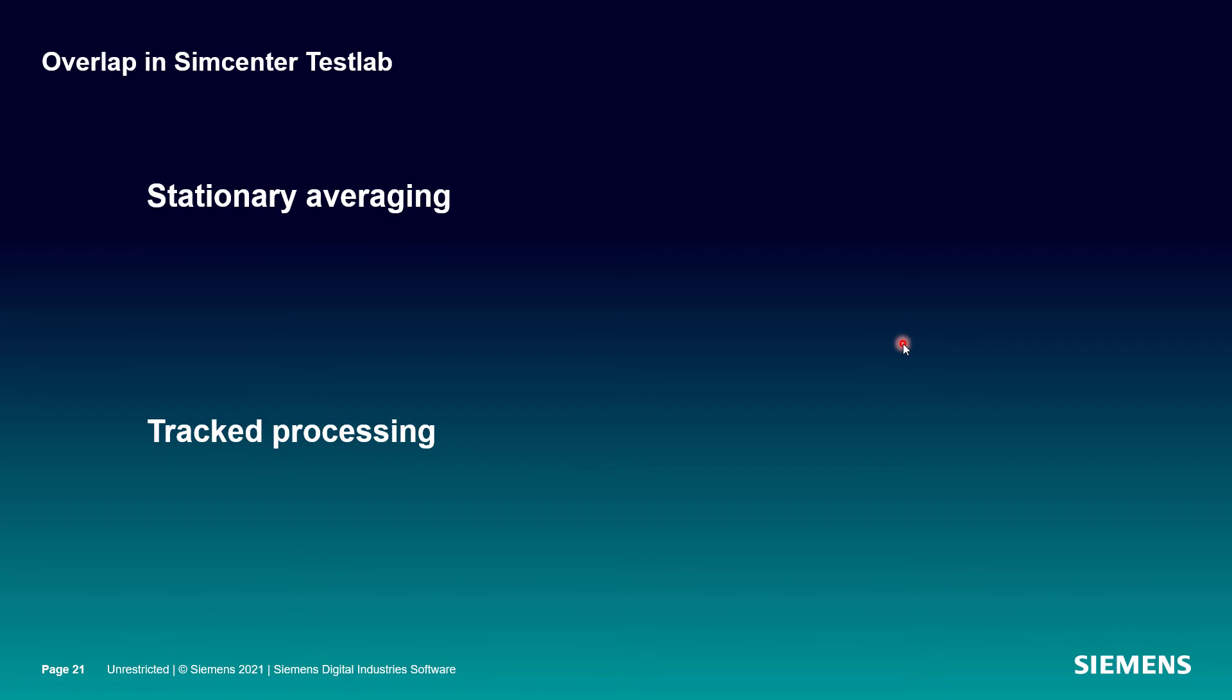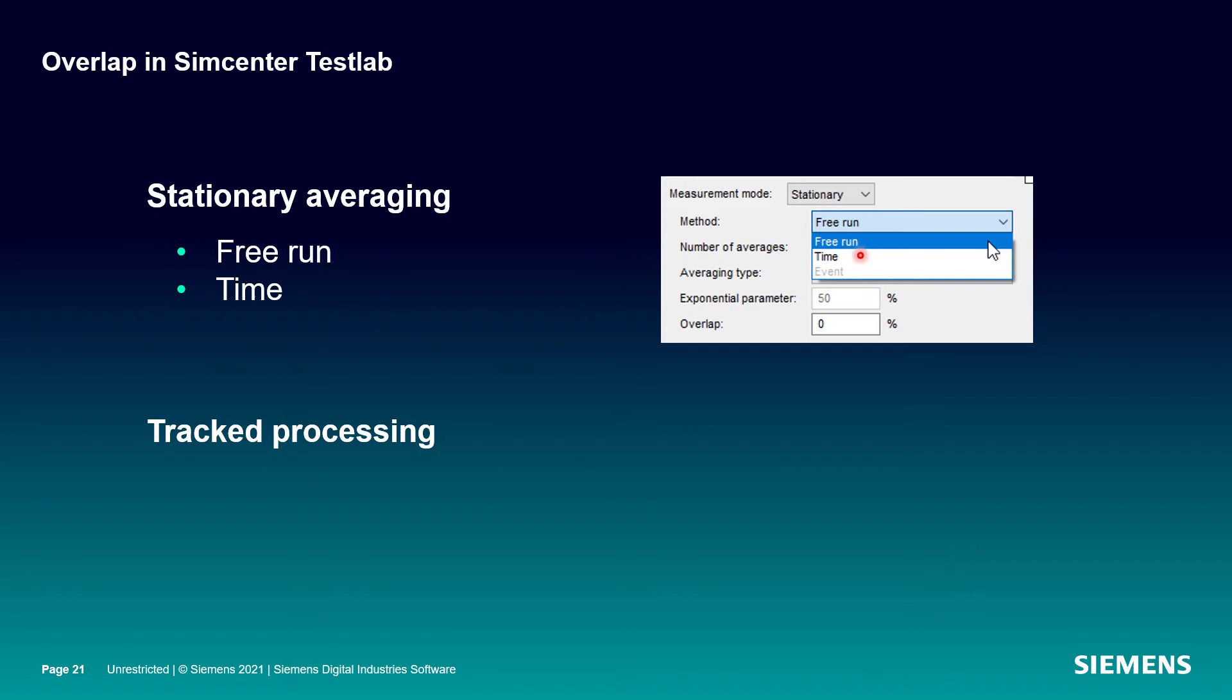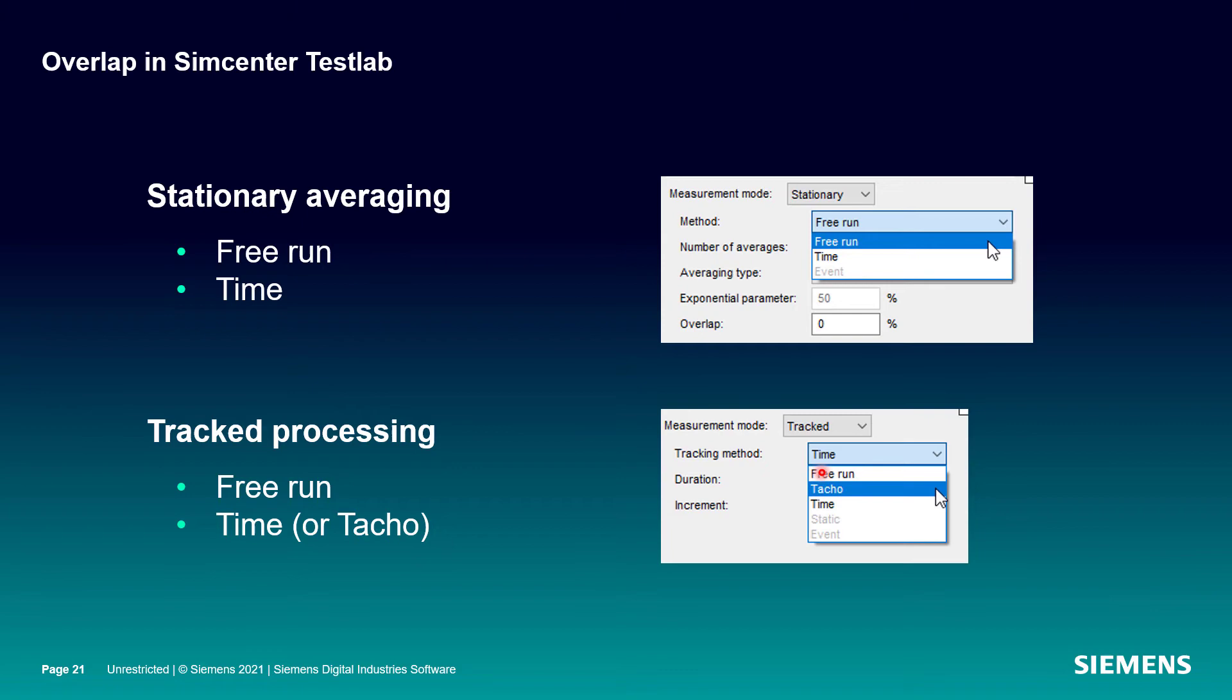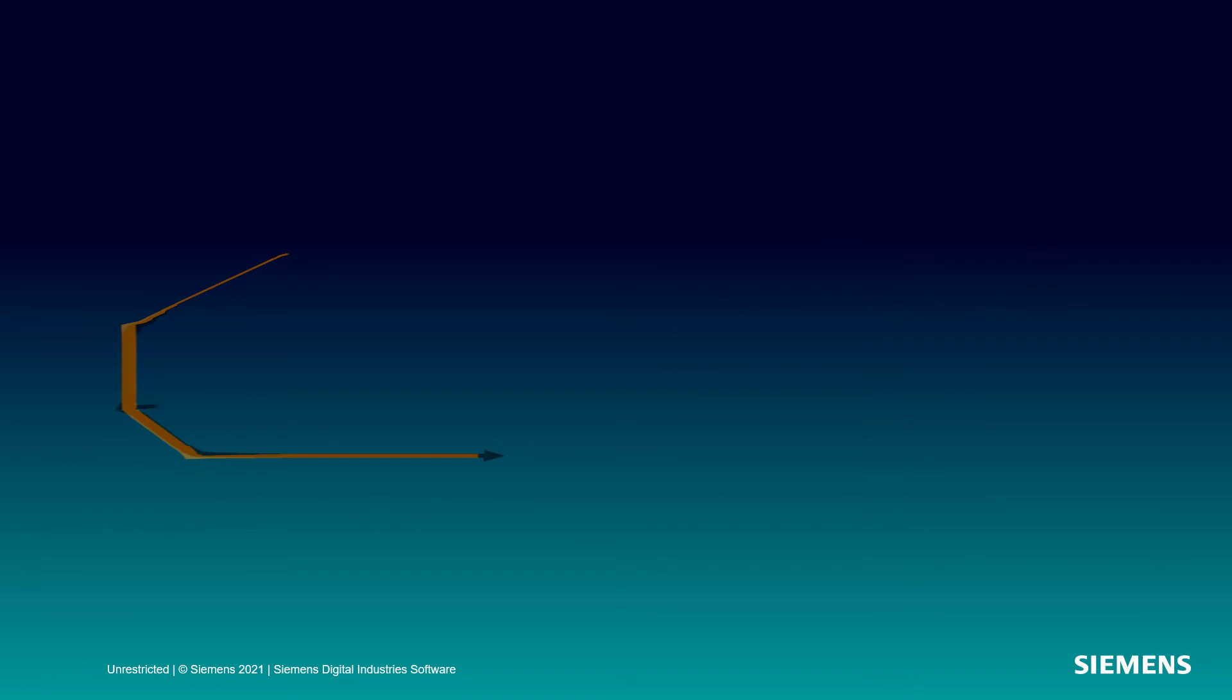So in test lab, we have a couple of different places that we specify overlap. And it really comes down to whether we're doing that stationary averaging or we're doing track processing. And the settings are essentially the same. There's just some small differences here. So under stationary averaging, we have two main choices, free run and time. And under tracked processing, we have free run and then taco and time and taco and time. The choices you make are sort of similar. And so I'm just going to cover the time example here. Free run in both scenarios is almost identical. And then the time method in both scenarios, tracked and stationary are essentially identical. So I'm going to concentrate on free run versus time.